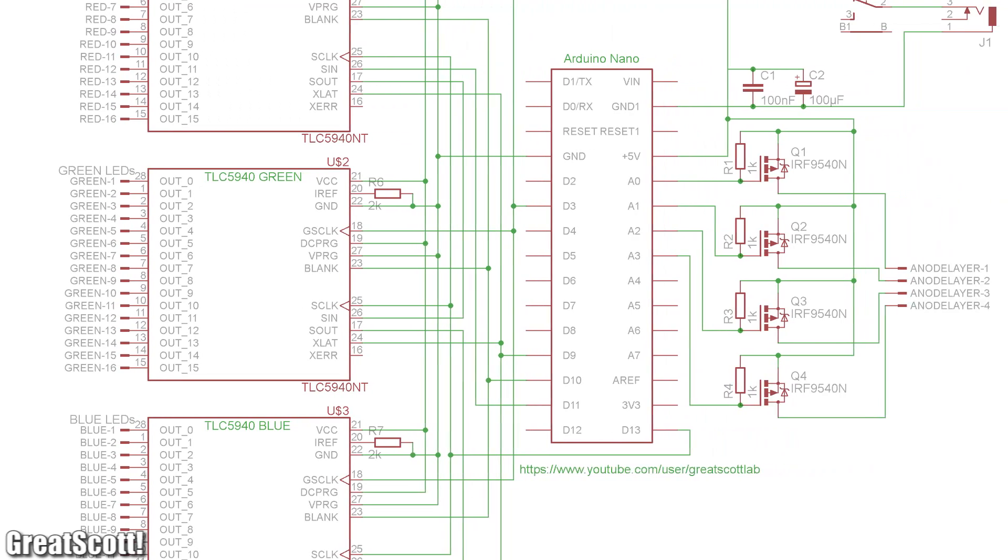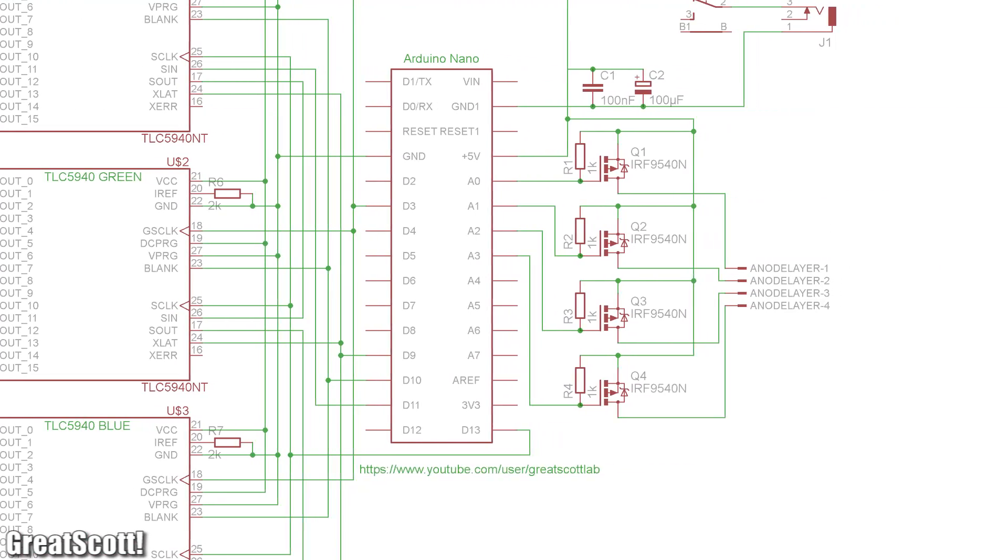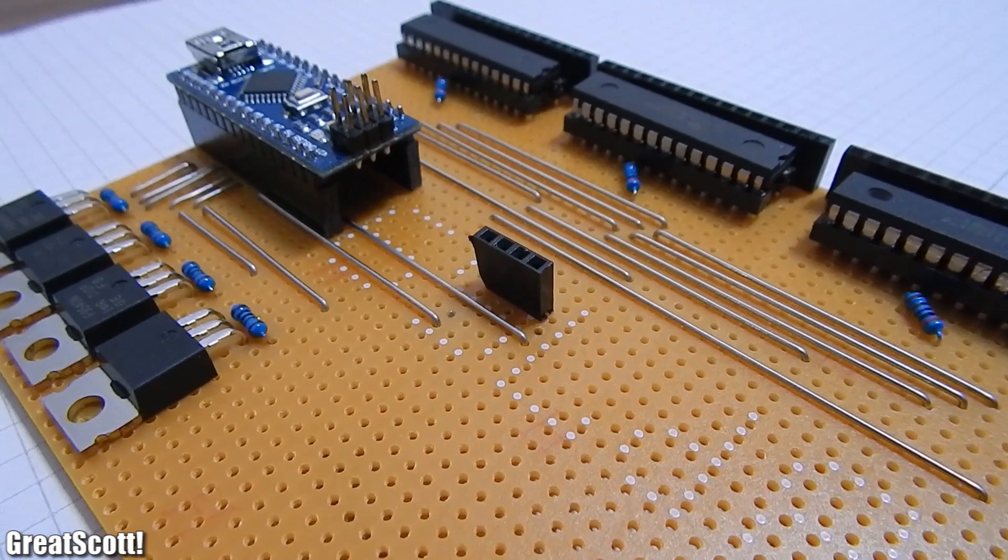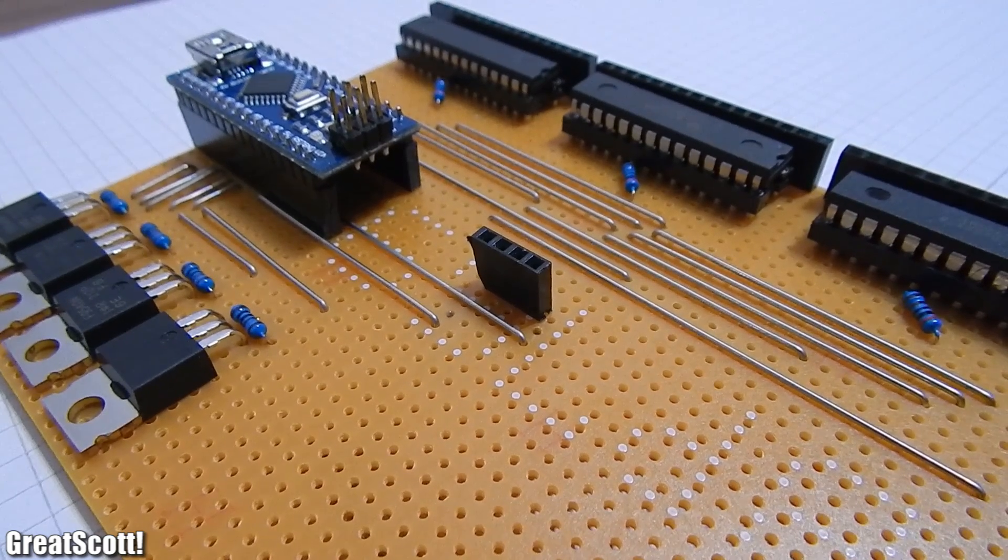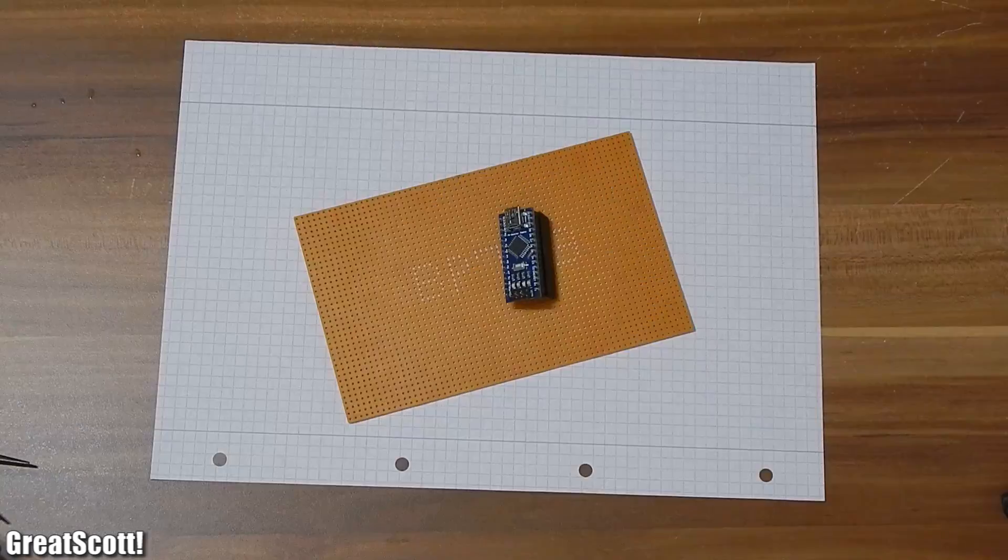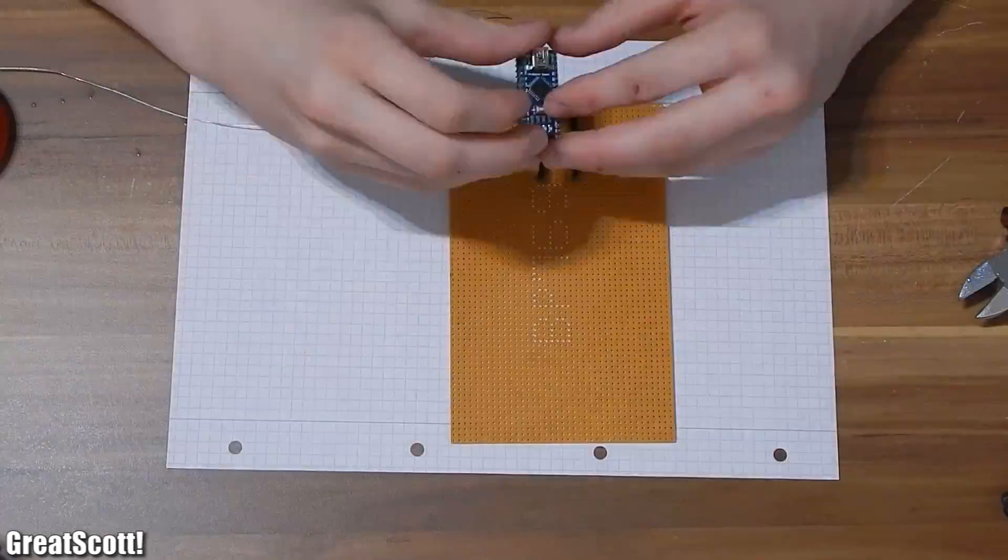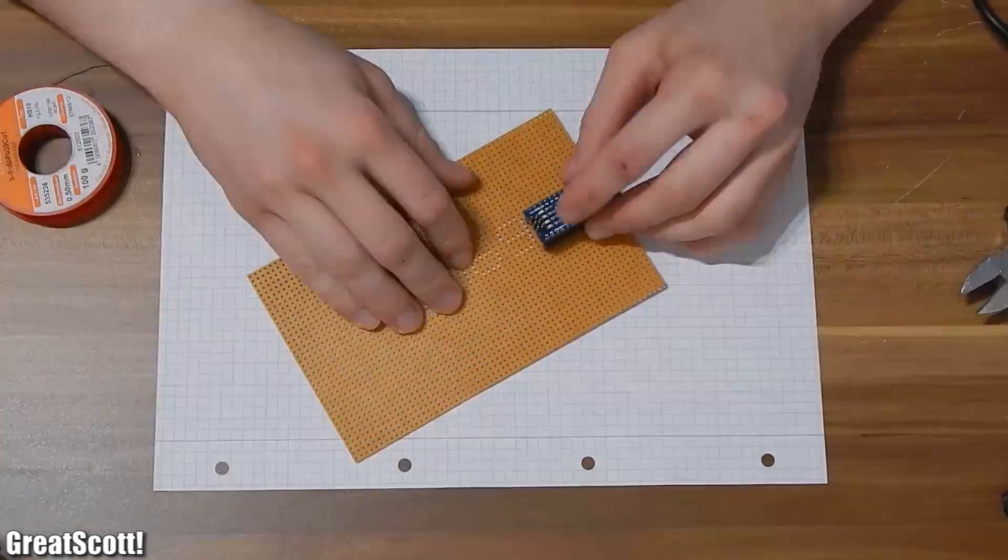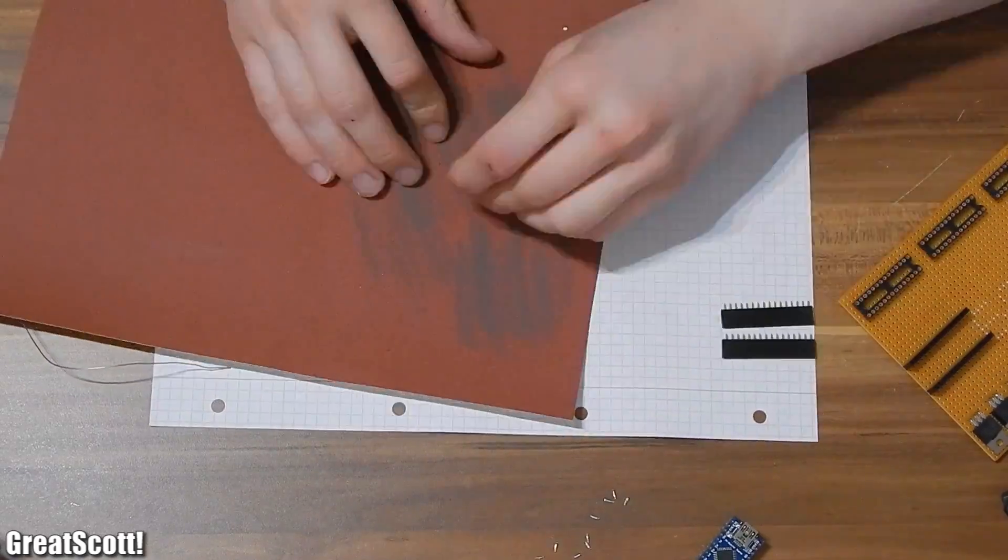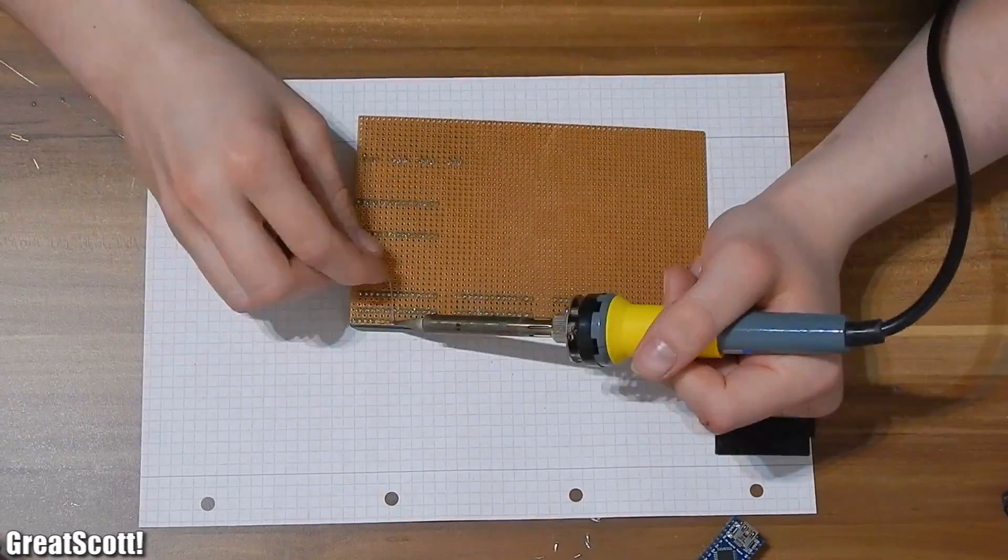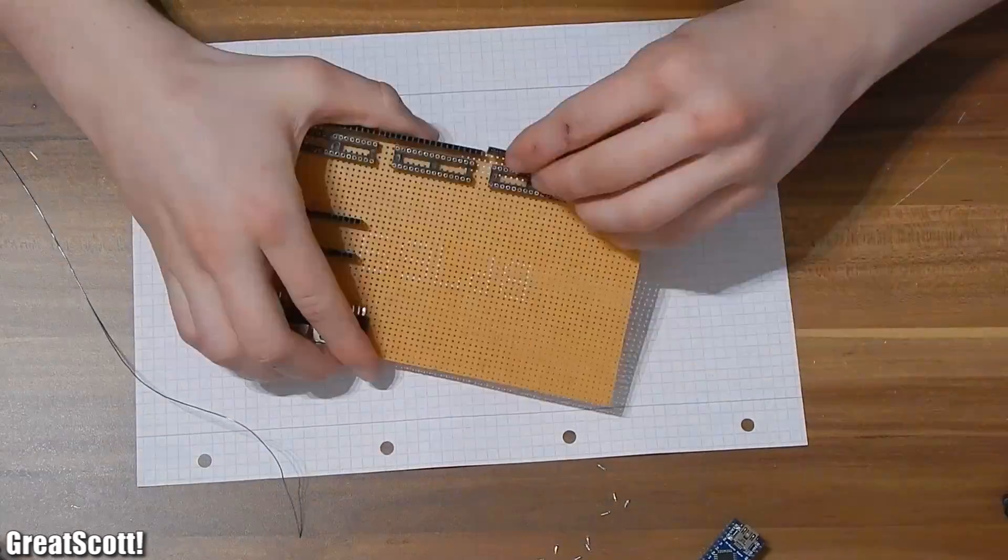I created this schematic for you guys to recreate the project, but I did not make a layout diagram for the PCB. But it isn't that hard. I used female headers to construct a socket for the Arduino. This way I can easily replace it. I also used the headers for the 16 outputs of each TLC 5940 and the drain of the p-channel MOSFET.